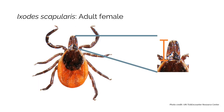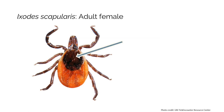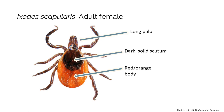Notice the length of the mouthparts. The length of the palpi is greater than the width of the basis capitulum. The scutum is round, dark, and solid in color. The alloscutum is bright red or an orangey color. These colors can change with feeding and with age. These three characteristics are key in identifying an adult female black-legged tick.